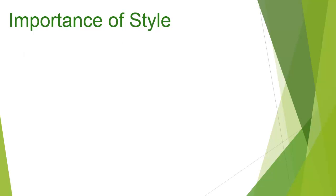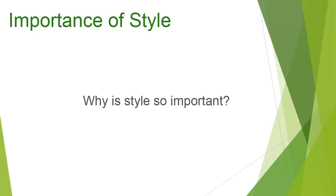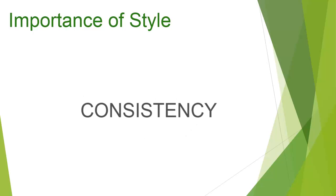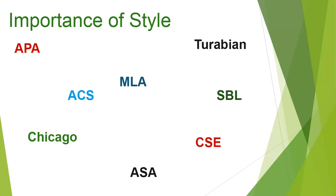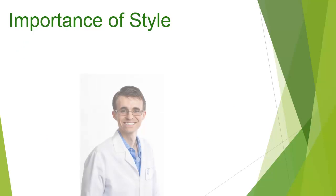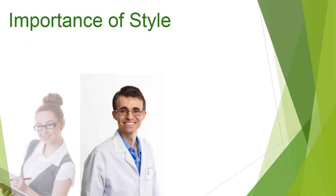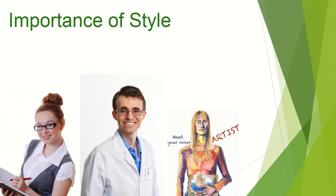So at this point you might ask: I understand why citing is so important, but why is style so important? The answer is similar to the reason that proper spelling and punctuation are important — consistency helps your readers figure out what you're trying to say. You might also ask: why are there so many formats? The answer is that citation practices developed over hundreds of years within each academic discipline.